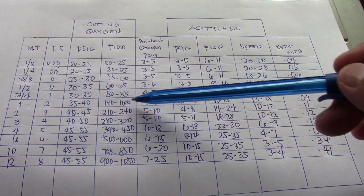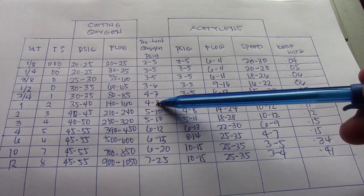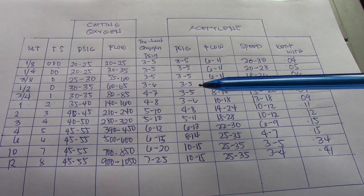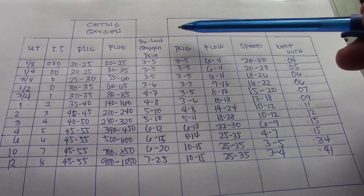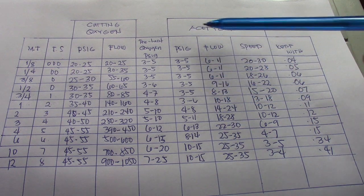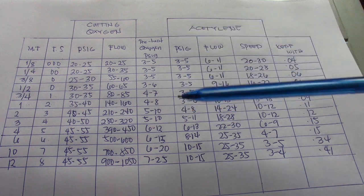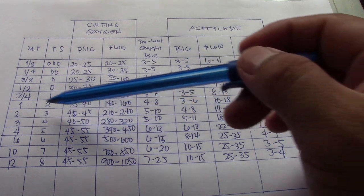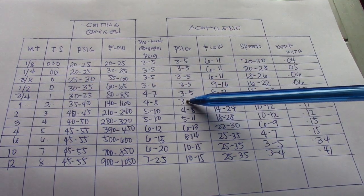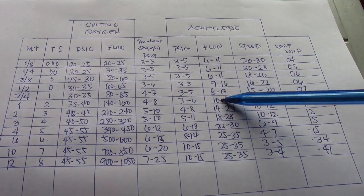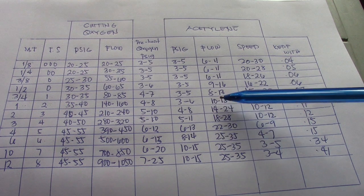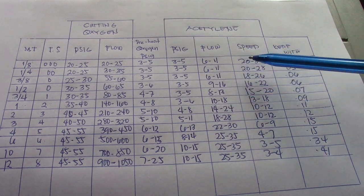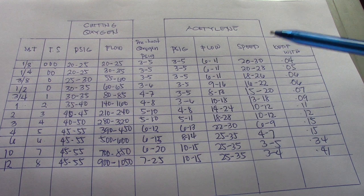The speed for 1-inch thickness is 4 to 8 inches per minute. Now for the acetylene column — the acetylene pressure in PSI for 1-inch thickness is 3 to 26, and the flow is 10 to 18.